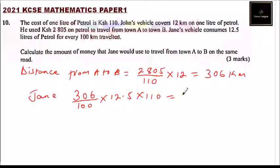So you can use your calculator and you'll be able to find this is 4,250 shillings. So that's how you are supposed to do that question, and you get three marks.